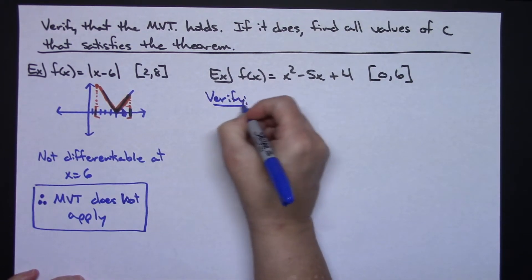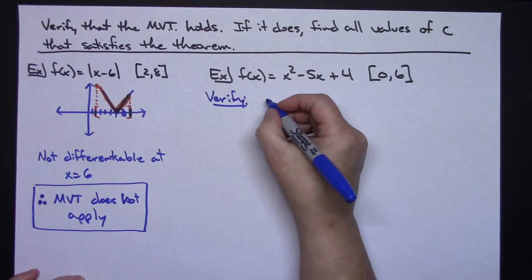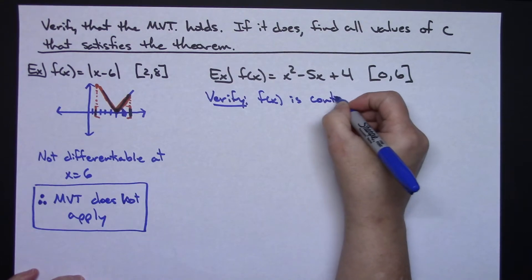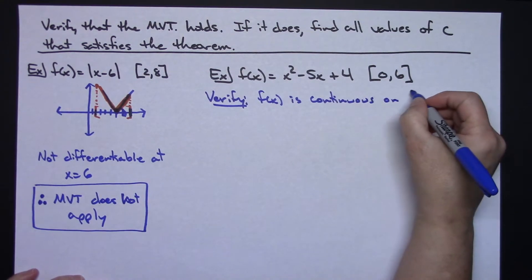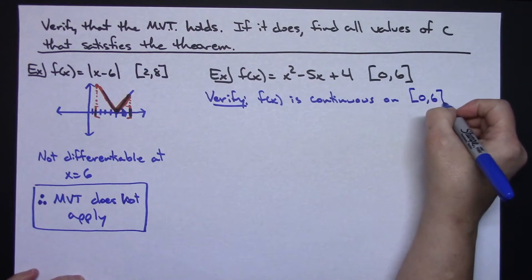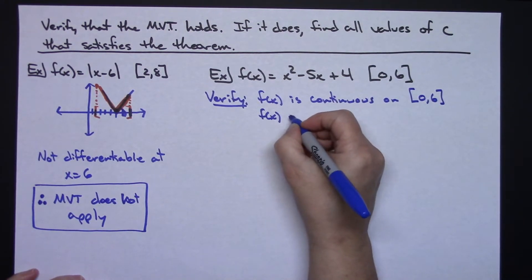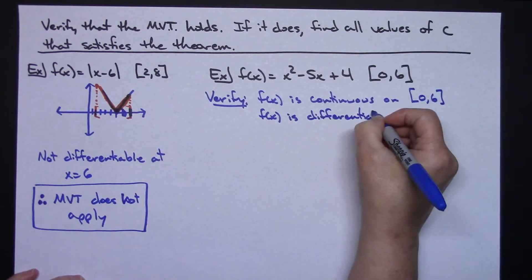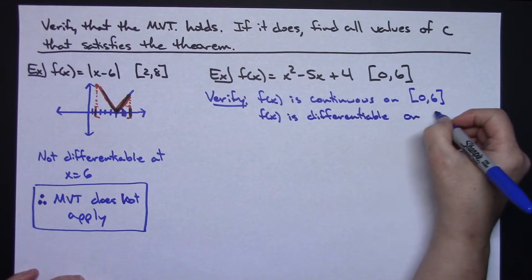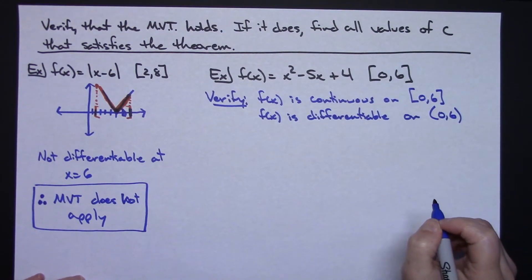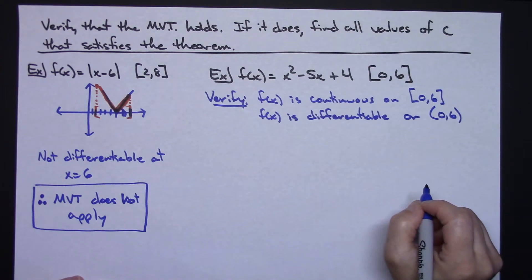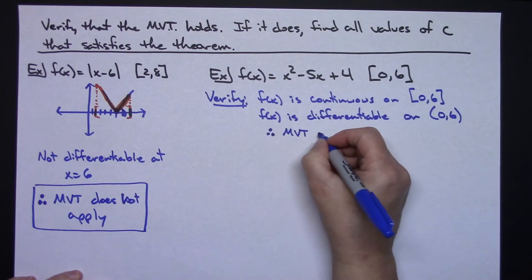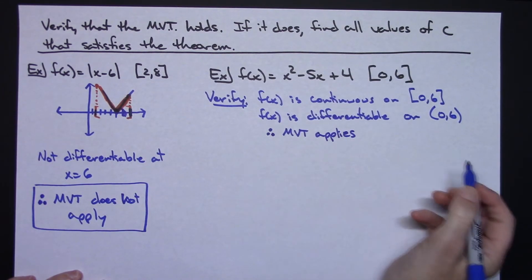Let's make note of what we've just talked about. In our verification: f of x is continuous on the closed interval from zero to six, and f of x is differentiable on the open interval from zero to six. Those are my only two conditions that have to be met for this theorem to apply. Therefore, the mean value theorem applies.